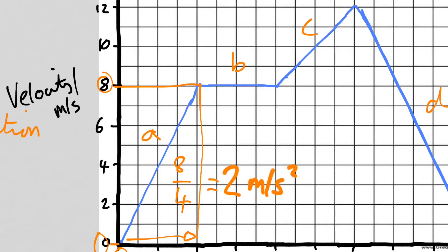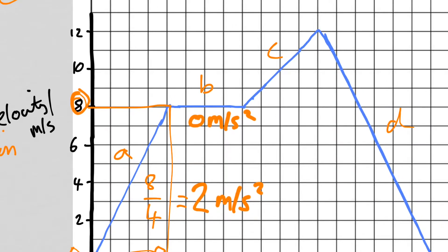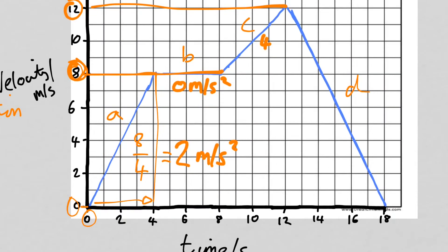Section B — you can clearly see it's not accelerating, so it's zero meters per second squared. However it is moving at eight meters per second; it's just not getting faster. For section C, the velocity went from eight to twelve meters per second, so the change in velocity is four meters per second. It started accelerating at eight seconds and finished at twelve seconds, so it took four seconds. Four divided by four gives one meter per second squared.